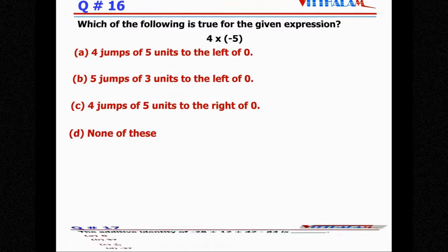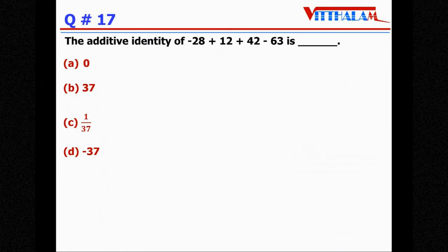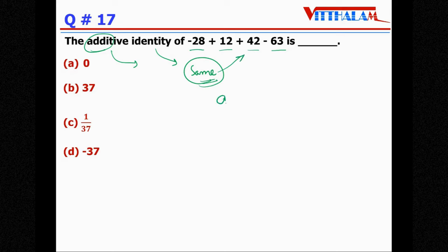Let's go for next, the additive identity of minus 28 plus 12 plus 48 minus 63. Now when there is additive identity, identity means it's the same number. Whenever we add, it's additive, so whenever we add a particular number in any number the answer should be the same number, that is any number only.